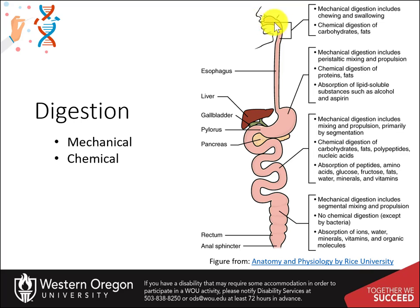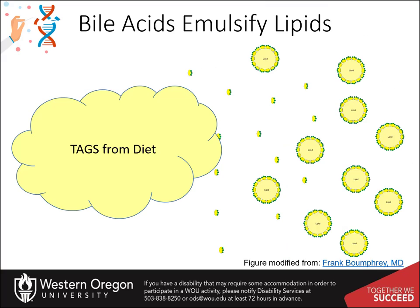Digestion begins in the mouth and continues as food travels through the small intestine. Most absorption occurs in the small intestine. Recall from our last section that bile acids and bile salts are used to emulsify fats, or mechanically break them down into smaller suspended particles. This occurs in the small intestine.